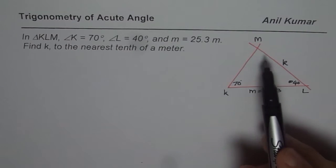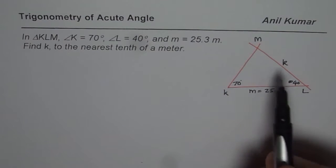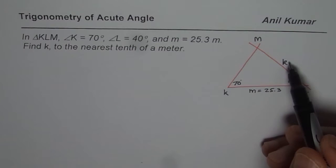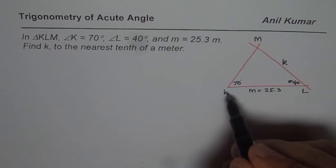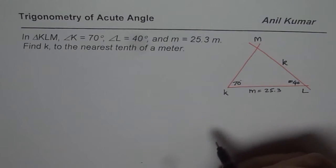So always label your triangle with capital letters on the vertices and side opposite will be lowercase with the same letter. So K will be opposite to the vertex K. That is how it is.